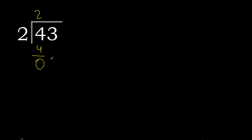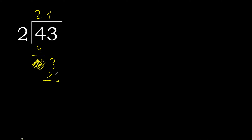Eliminate 0. 2 multiplied by 2 is 4 — excessive. 2 multiplied by 1 is 2; 2 is the nearest. Subtract, remainder is 1. There is no number that goes down.